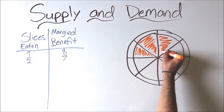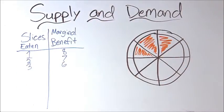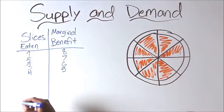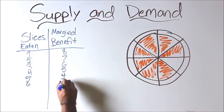For the first slice that we eat, we get 8 units of benefit. For the second slice, we get 7. For the third, 6, and so on. By the time we get to the eighth slice, we only get one more unit of benefit for eating it.